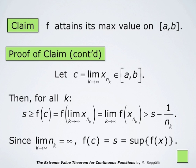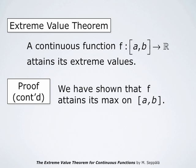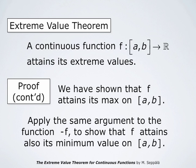This completes the proof that f attains its maximum value on the interval from a to b. To show that f also attains its minimum value, we consider the function negative f. If f is continuous, then negative f is also continuous, and we may apply the same argument to show that negative f attains its maximum value on the interval from a to b. The maximum value of negative f corresponds to the minimum value of f, so f attains its minimum value on the interval from a to b as well.